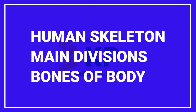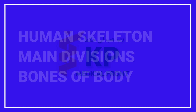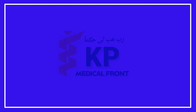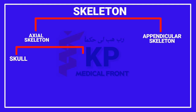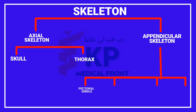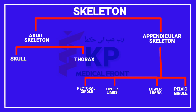We will discuss the division of the human skeleton system and the different bones of the human body. The human skeleton is divided into two main divisions: the axial skeleton and the appendicular skeleton. The axial skeleton is subdivided into two regions: the skull and the thorax. The appendicular skeleton is subdivided into four parts: the pectoral girdle, the upper limb, the lower limb, and the pelvic girdle. These are the main divisions of the human skeletal system.